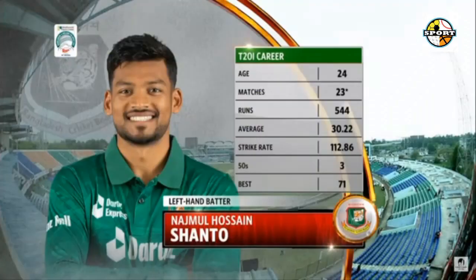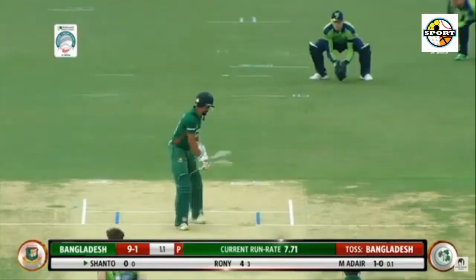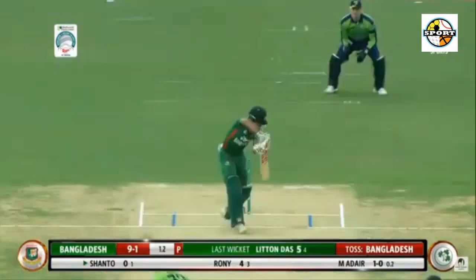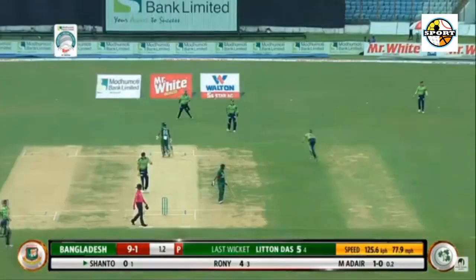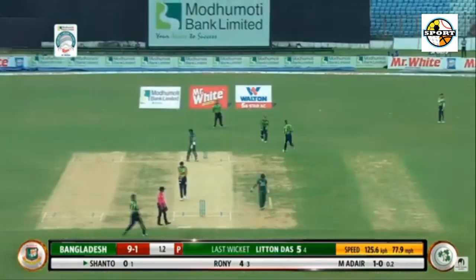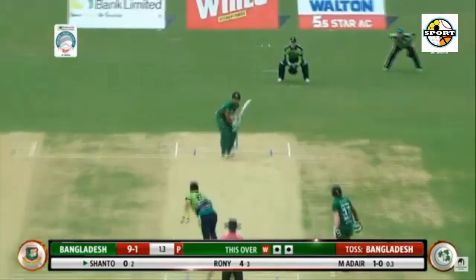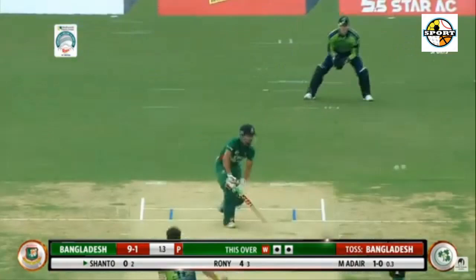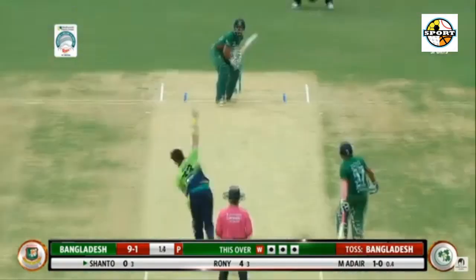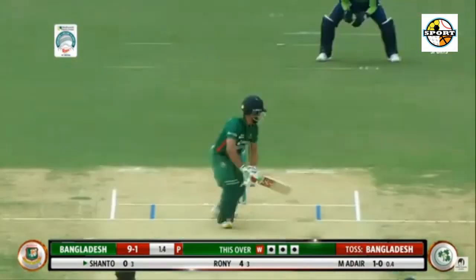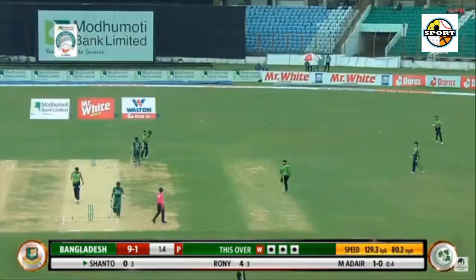A shot of a man in form, judging lengths at ease. 2.6: Tector to Shanto, out caught by Kempfer. Flighted on middle, Shanto goes for the slog across the line. Comes off the bottom of the bat and goes towards deep mid-wicket. Kempfer almost drops it trying a reverse cup, but grabs it on the second attempt.